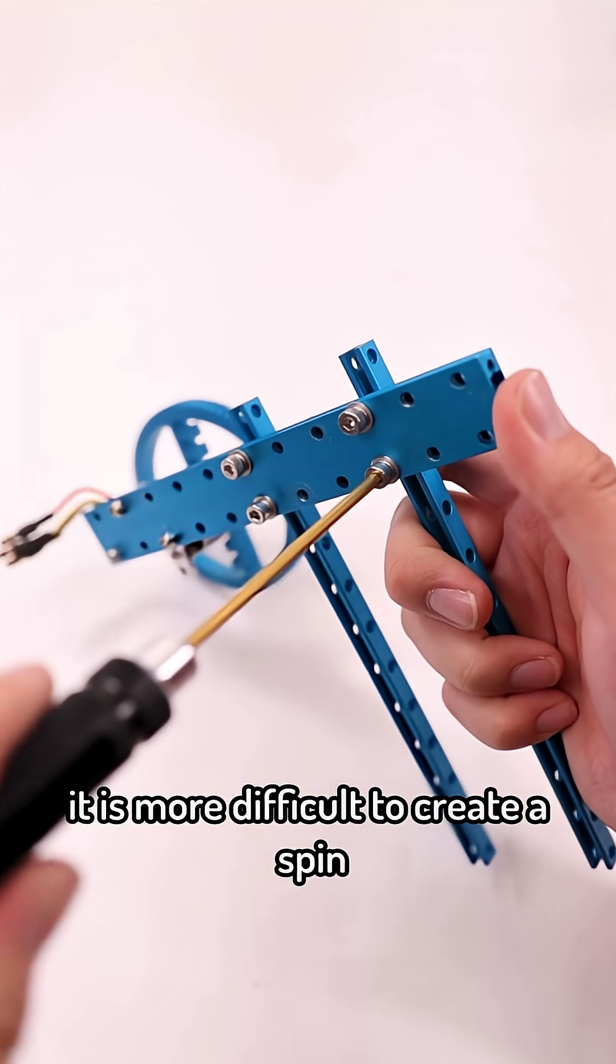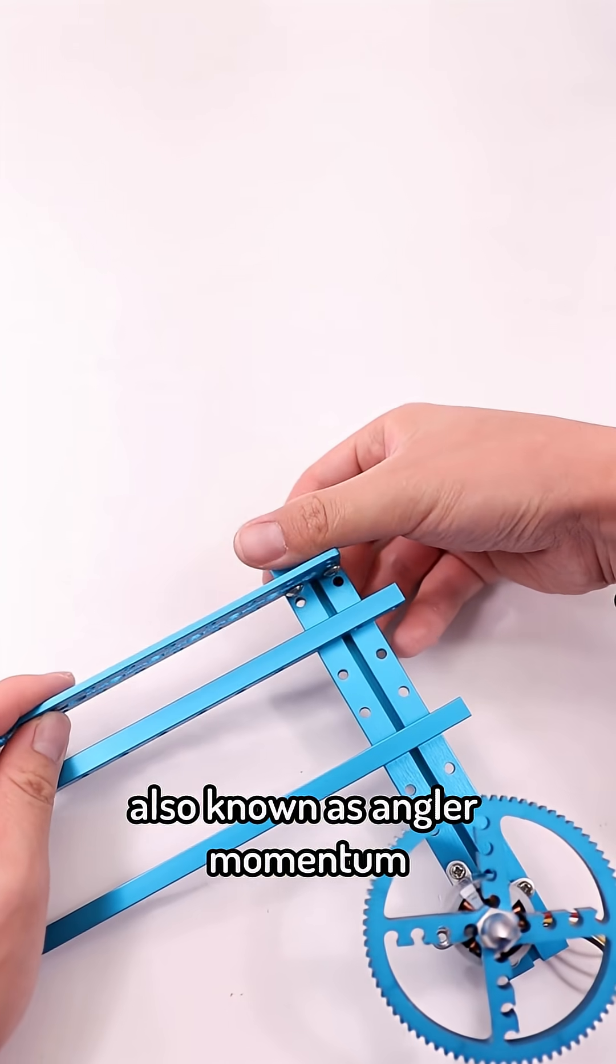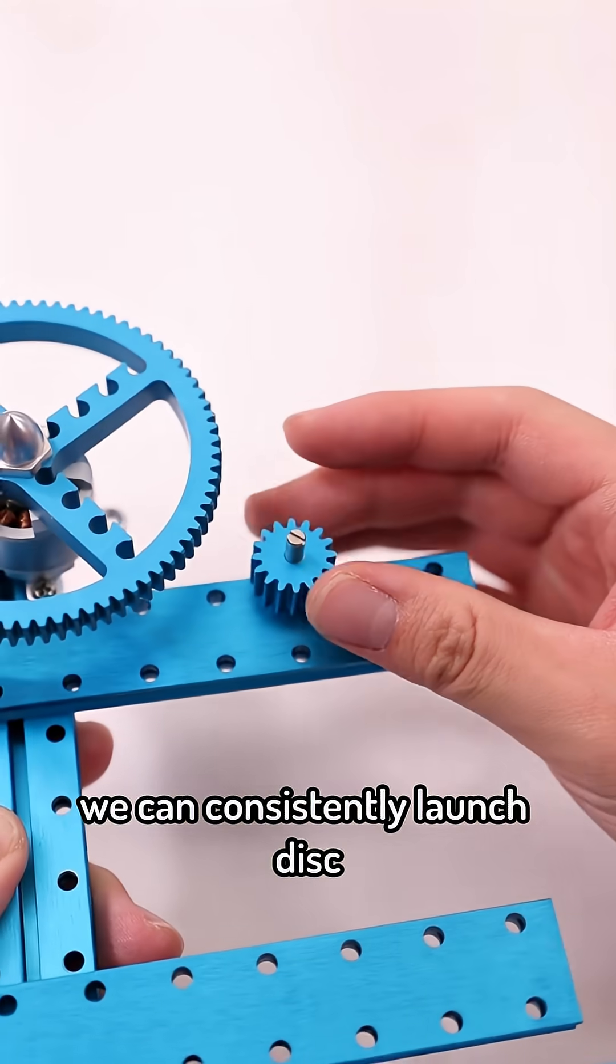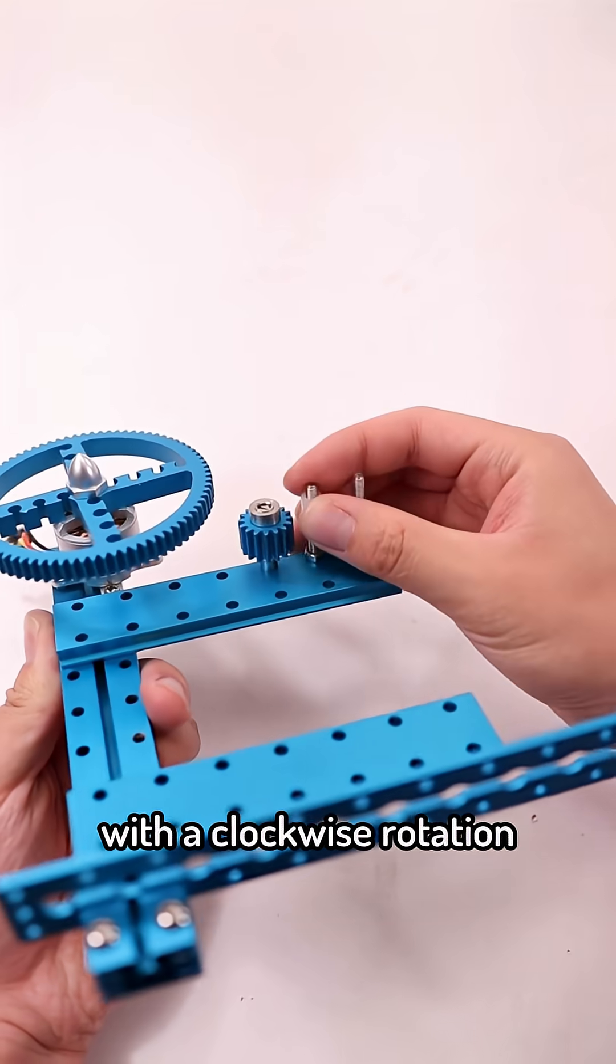With a dual shooter it is more difficult to create a spin, also known as angular momentum. With this design we can consistently launch discs with a clockwise rotation.